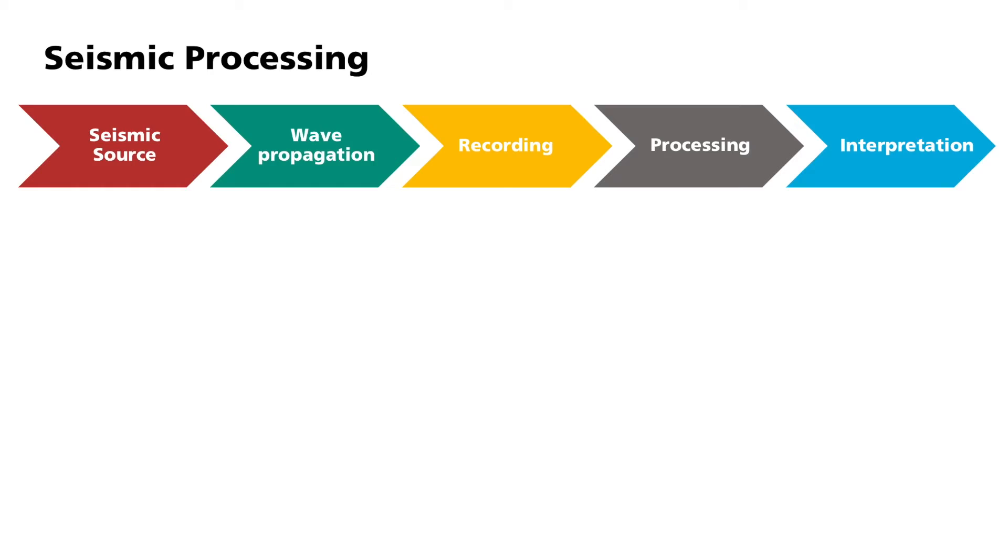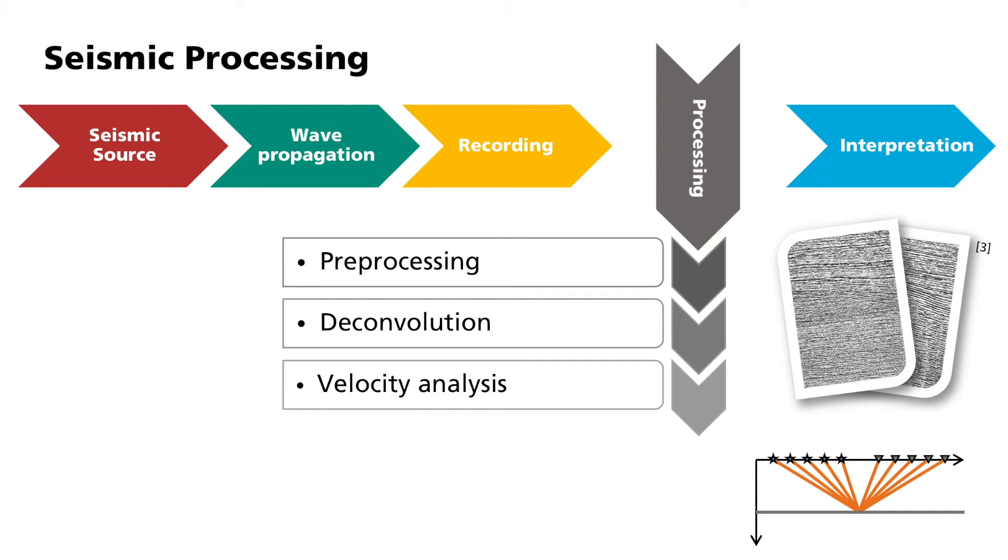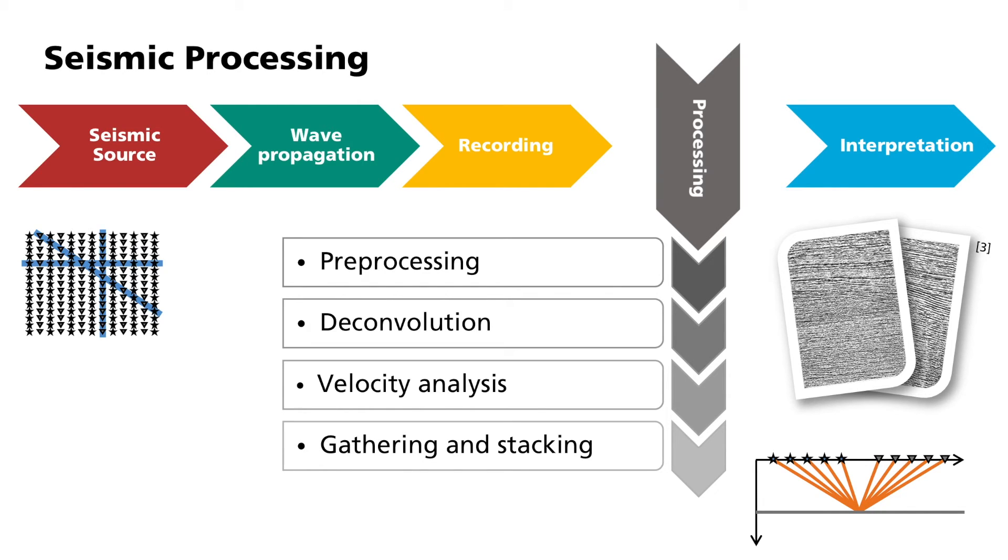First of all, let's look at deconvolution. Deconvolution sharpens the signal and increases the vertical resolution in a subsurface. The velocity analysis determines the average propagation velocity of seismic waves from the seismic data in the area being surveyed. This is followed by the stacking of the data.